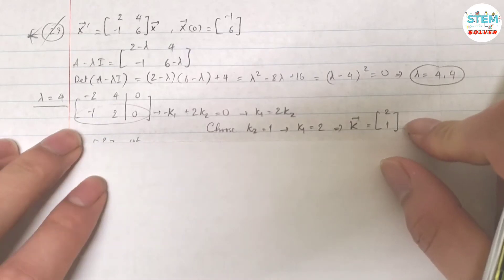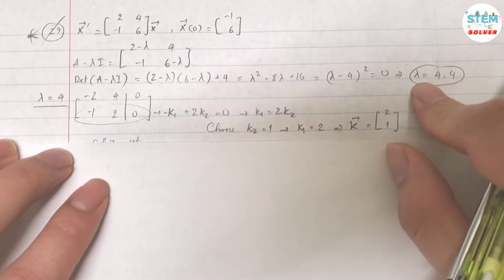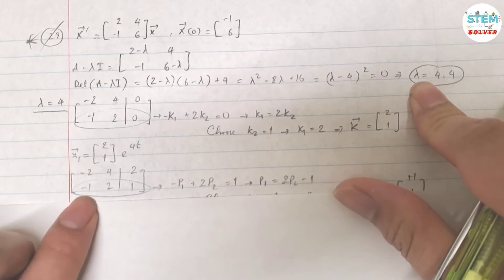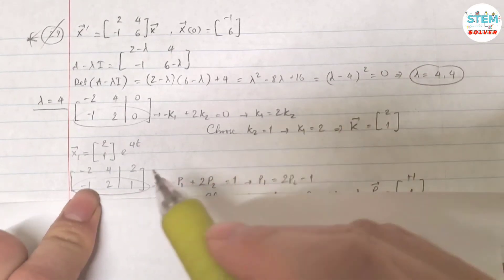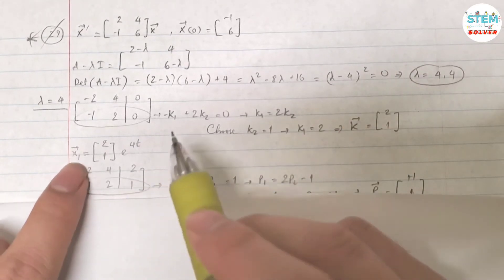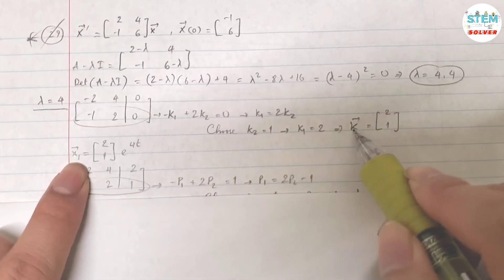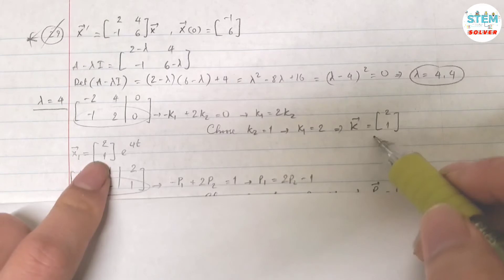Now how to find second eigenvector? Well, use the same matrix. Once I have k equal to 1, I can write my vector x1 which is [2, 1] times e to the 4t.